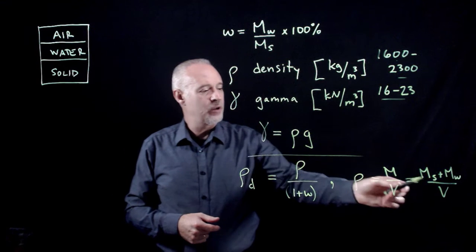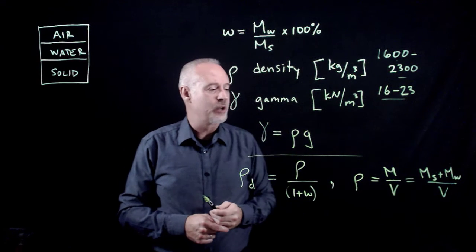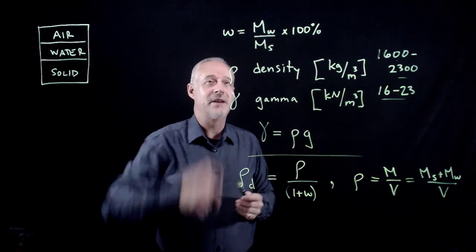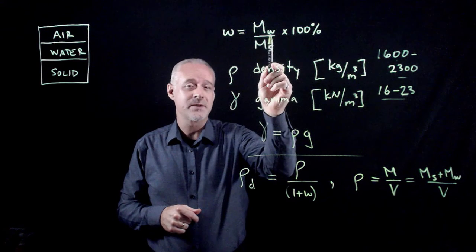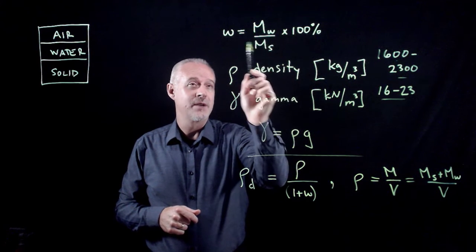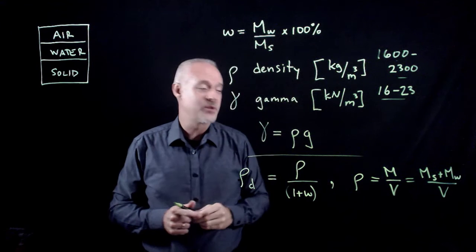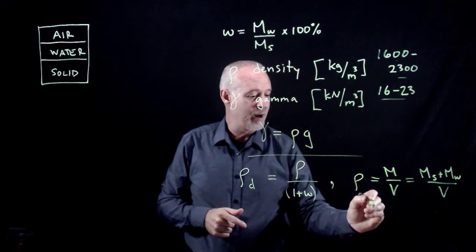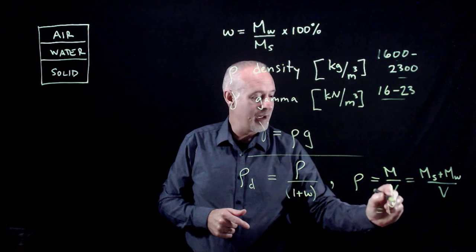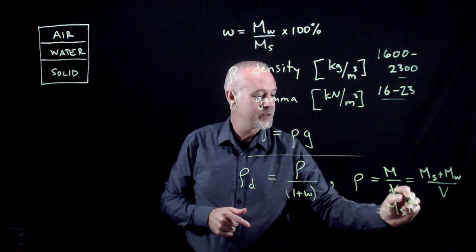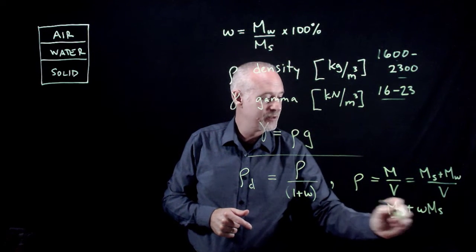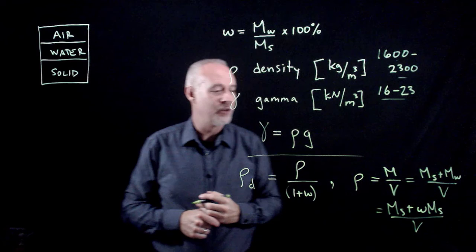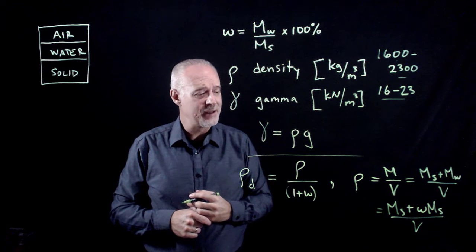If I look at this formula and think back to my definition of the water content, I can actually express the mass of the water as the mass of the solids times the water content. So I could rewrite this formula as the mass of the solids plus the water content times the mass of the solids divided by the volume.